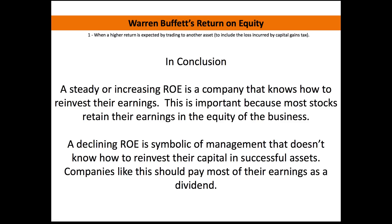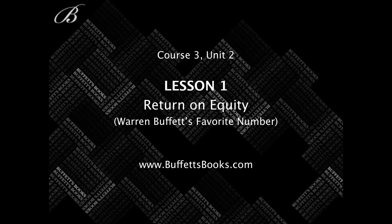Companies with declining ROE are ones you want to stay away from — they should be paying out all their money in dividends because they don't know how to reinvest it themselves. Buffett is really adamant about only buying companies that sustain a very high return on equity, because he knows that management knows how to reinvest that capital. Since roughly 75% of the money being made is put back into the book value and not paid out as a dividend, he wants to make sure it's reinvested in quality assets. I personally look for companies that sustain a return on equity above 7 to 8 percent. This concludes Course 3, Unit 2, Lesson 1 on Return on Equity — Warren Buffett's favorite number.